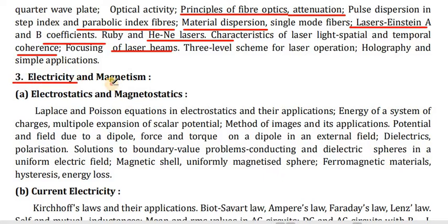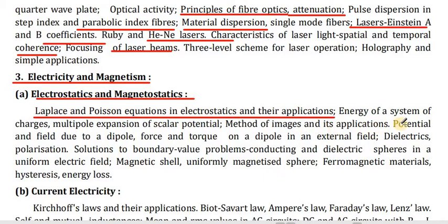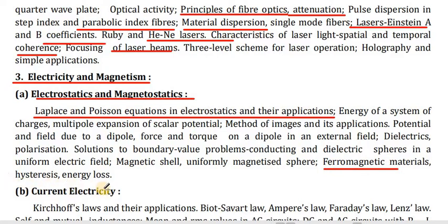Point 3: Electricity and Magnetism. Section A — Electrostatics and Magnetostatics: Laplace and Poisson's equations in electrostatics and their applications, energy of a system of charges, multipole expansion of scalar potential, method of images and its applications, potential and field due to a dipole, force and torque on a dipole in an external field, dielectric polarization, solution to boundary value problems, conducting and dielectric spheres in a uniform electric field, uniformly magnetized sphere, ferromagnetic materials, hysteresis, energy loss.